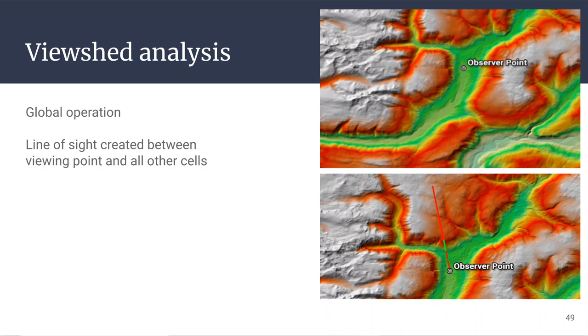So for each of these observation points or cells of interest that you're calculating the viewshed for, a line integrating elevation is created to each and every other cell in the entire data set. If land or an object that's in the data set rises above the line of sight that's created, then that target cell is not visible. So it's marked zero in the output.